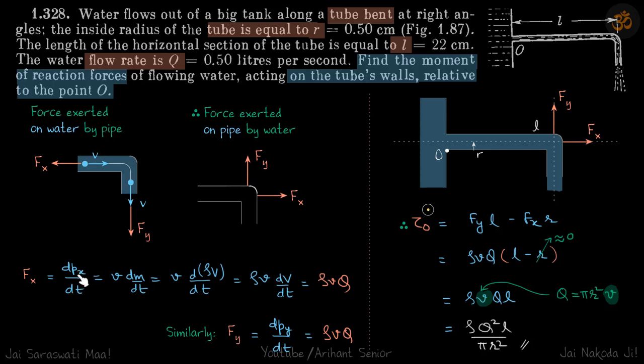Now P is MV, but velocity is constant, so we take velocity outside. This becomes V dM by dt, and M is rho into volume. So rho is again constant, we'll take that out. So this becomes rho V into dV by dt. This V is volume. And dV by dt is given to us, that is Q. So this becomes rho VQ.